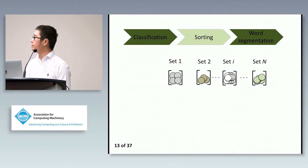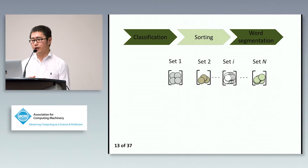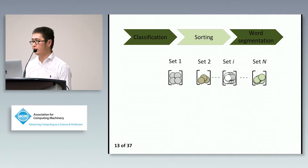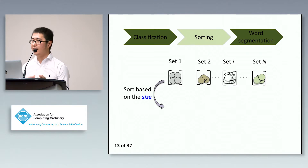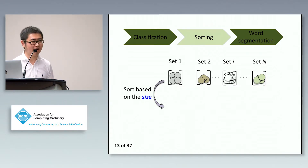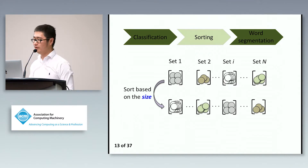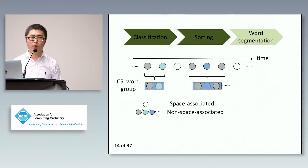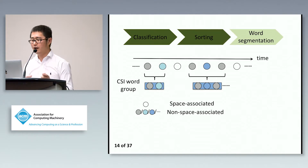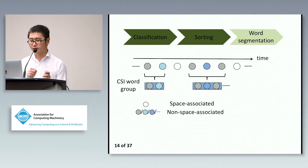The sorting step aims to identify the CSI samples caused by pressing the space key, because the space key almost always separates English words. We expect that CSI samples corresponding to the space key will appear more frequently than other CSI samples. Thus, we sort those sets according to size and associate the space key with the largest set. If this association does not work, we try the next largest one. After the space-associated CSI samples are identified, we begin word segmentation: everything between successive space-associated CSI samples is grouped together as a CSI word group.